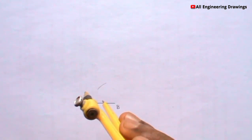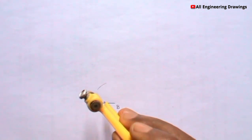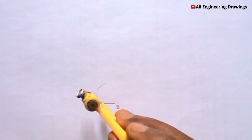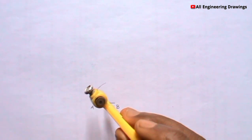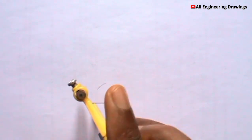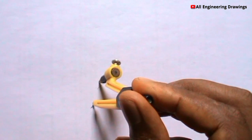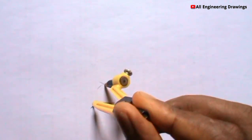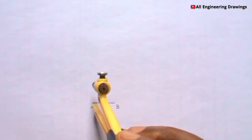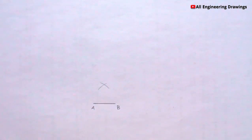Also place your compass on the other end of the line — this time on the A end — then cut an arc to intersect the previous arc you drew. You can label the point where the arcs intersect.